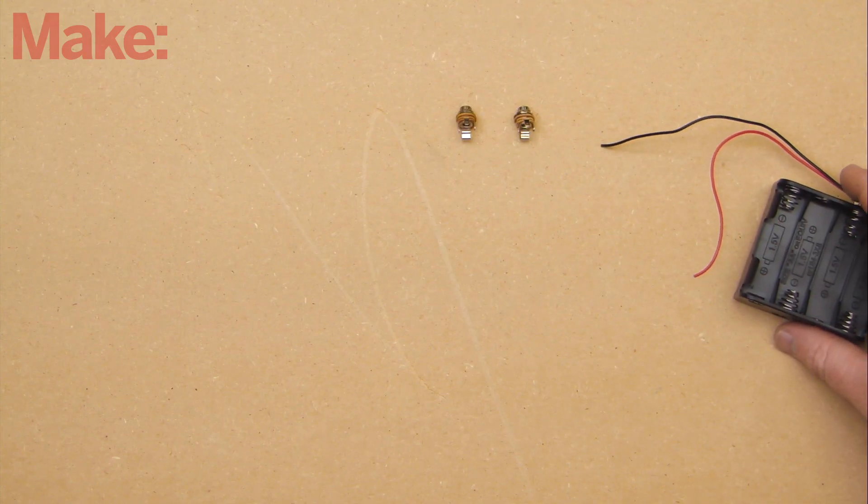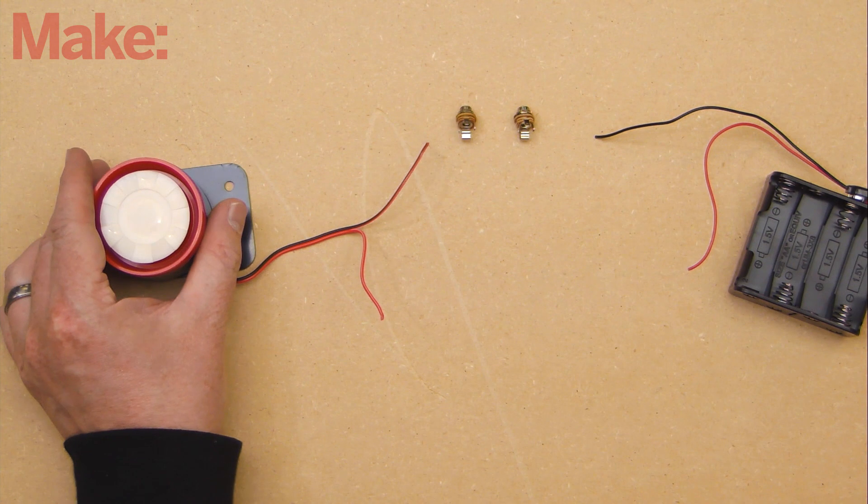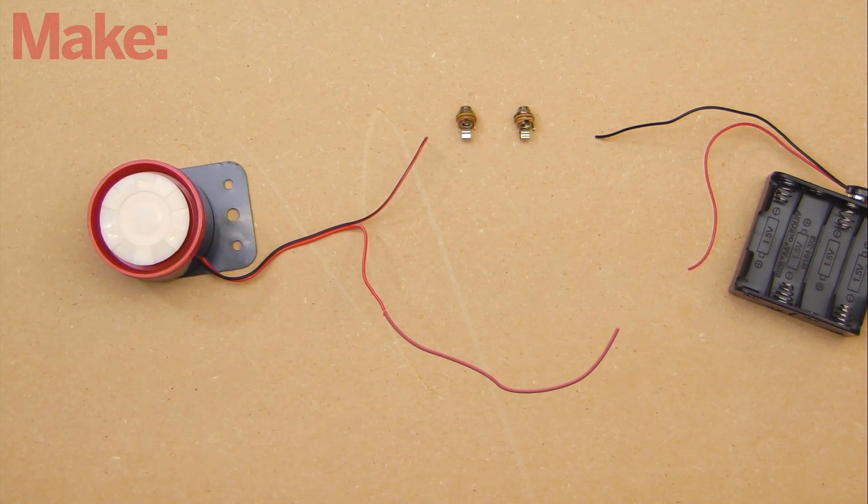Using just the red and black wires attached to the siren and the battery clip, we're going to put all the components in series. The idea is that the alarm will sound only when both audio plugs are removed from the jacks.